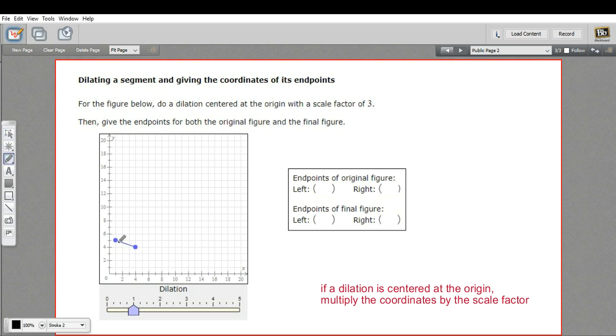So a transformation of a dilation, its original and its image, they're not going to be congruent. One's going to be bigger or smaller than the other.